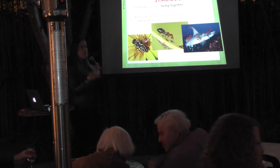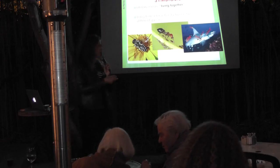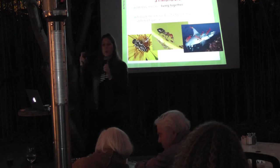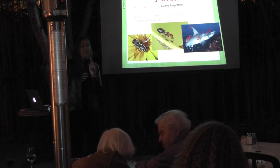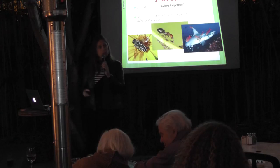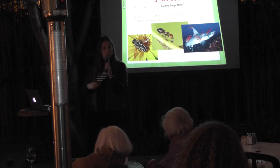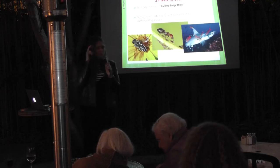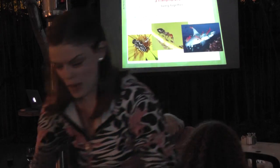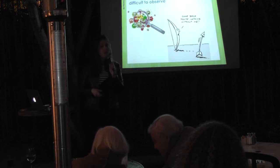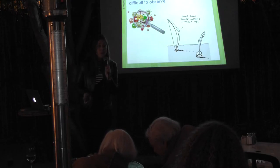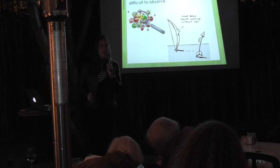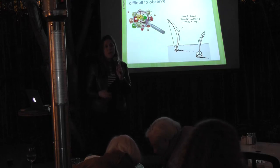The acacia gives compensation — nectar — to the ants. Or the remora that lives on the belly of the shark, eating all the parasites, keeping the shark clean. At the same time, the remora uses the leftover food of the shark. We always think about this kind of symbiosis that we can see with our eyes, but there is another kind of symbiosis we've never seen, because it's very difficult — we cannot see it unless we use a powerful microscope.